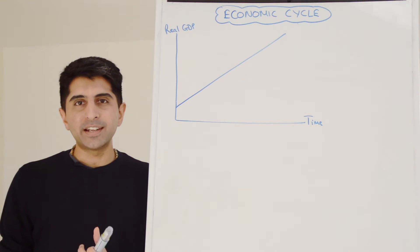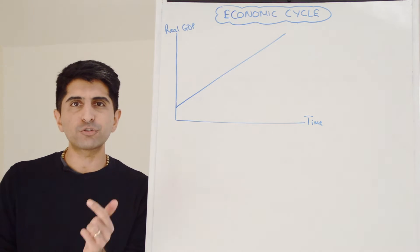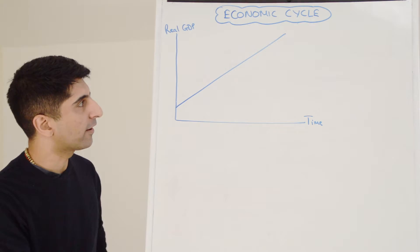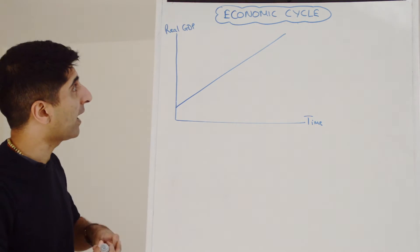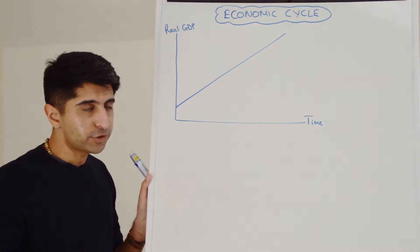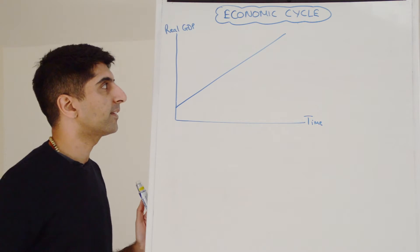Hi everyone, the macro objective for growth is for growth to be strong, sustained, and sustainable. If we were to map that on a diagram, it would look something like this. We have real GDP on the y-axis, and we're looking at growth, real GDP over time, time on the x-axis.